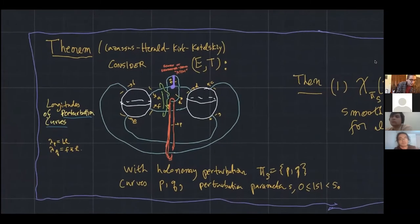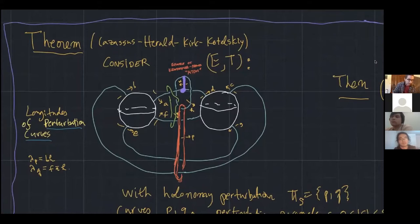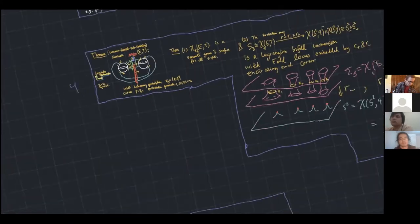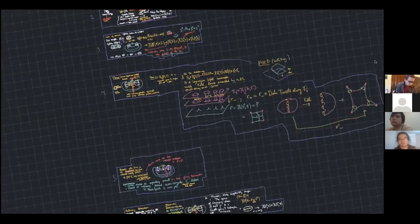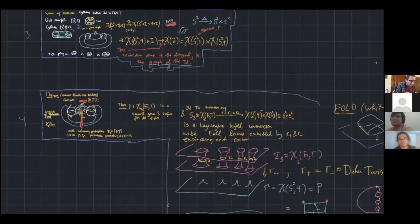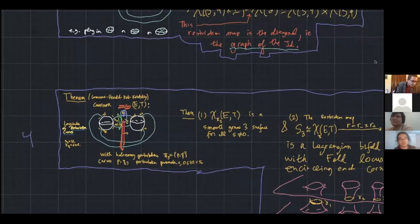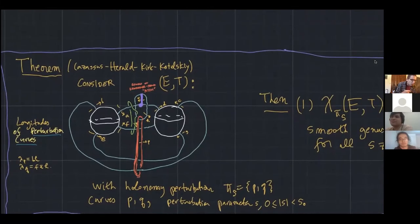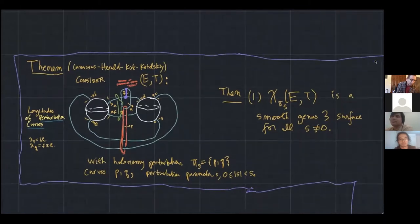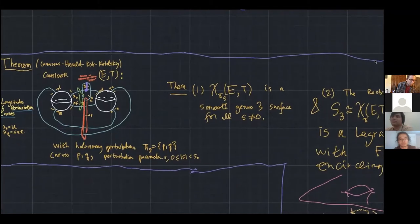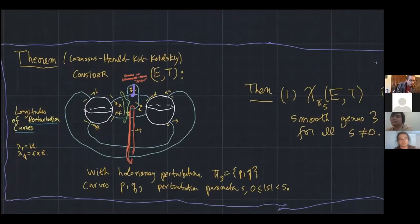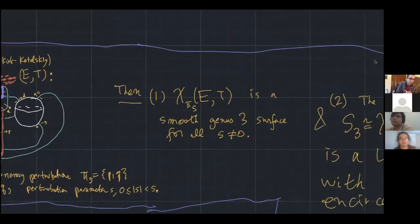First, a statement of the theorem. Take this tangle and look at the traceless character variety S perturbed along these two curves. There's one perturbation parameter S. If you apply these two perturbations and look at the resulting traceless character variety, it turns out to be a smooth genus three surface. The second part of the theorem — really the hardest part — is the identification of the restriction map of this smooth surface to the boundary pillowcases.